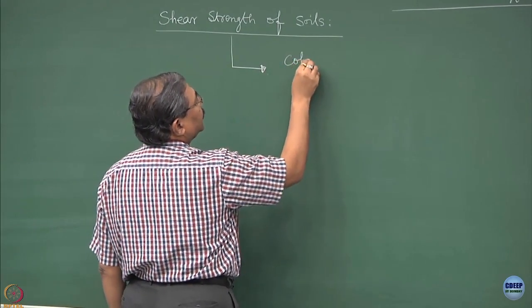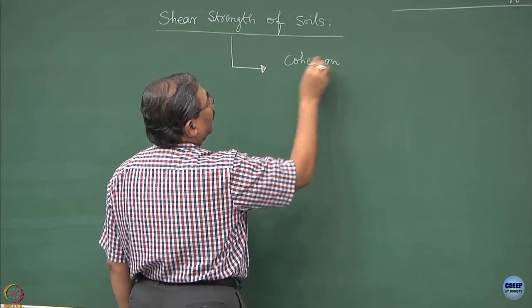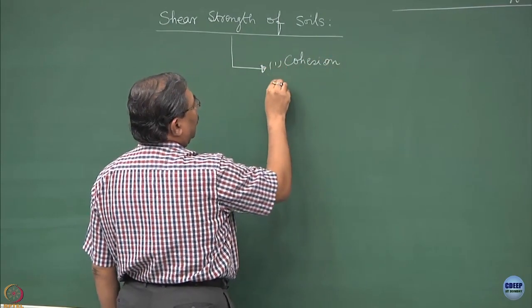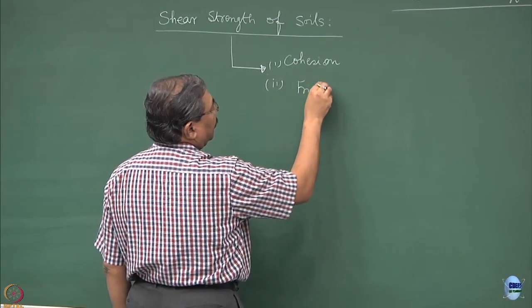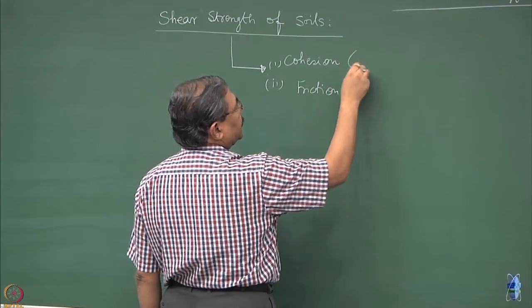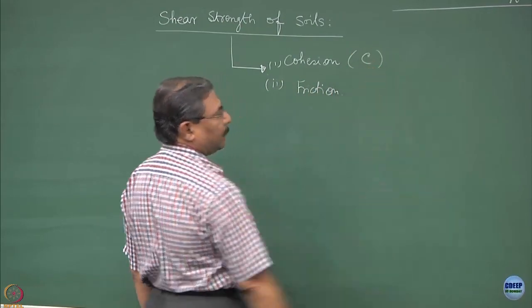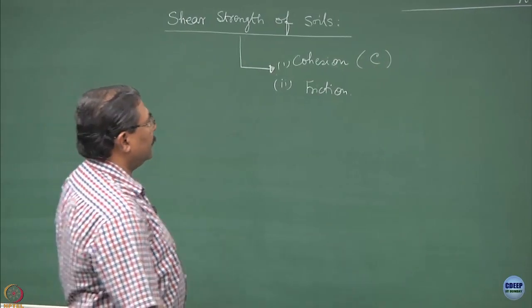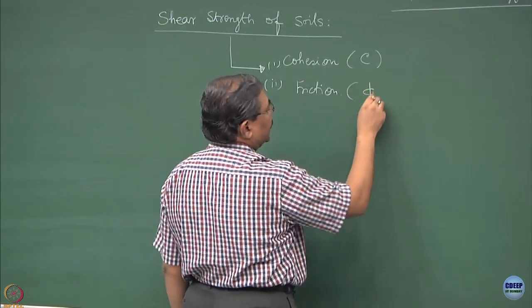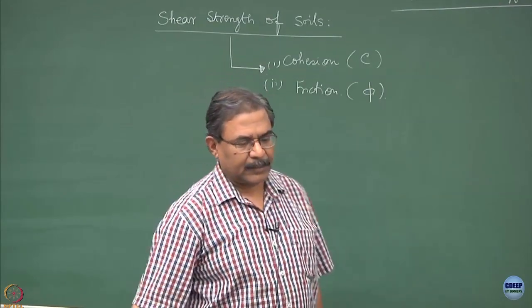That is the cohesion and the friction. Normally cohesion is denoted as C, capital C, and friction is denoted as phi, sometimes people also call this as phi.